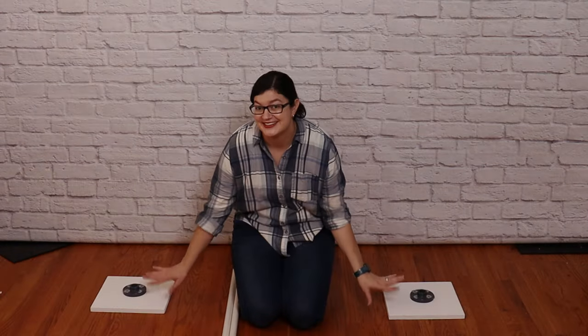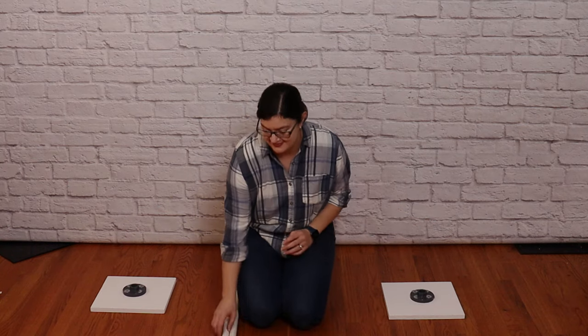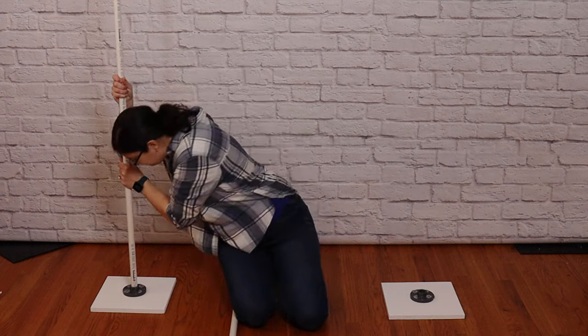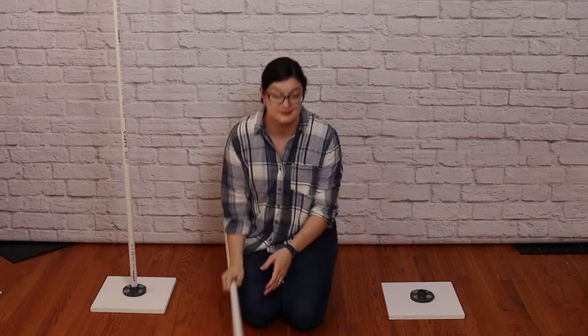Now we can finally assemble the arch. So to start off, I've got both of the bases four feet apart on center. And into those bases, I'm going to snugly seat both of my five foot lengths of PVC pipe.